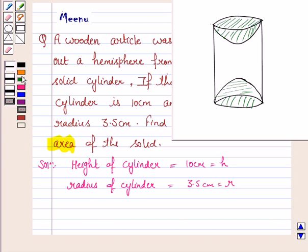The hemisphere is cut from each end, so the radius of the hemispheres would be the same as the radius of the cylinder.